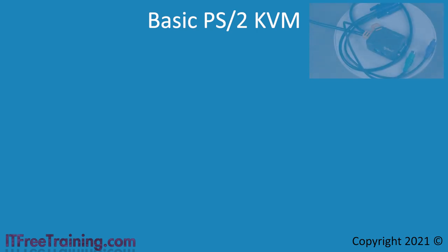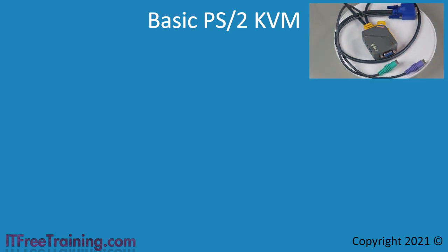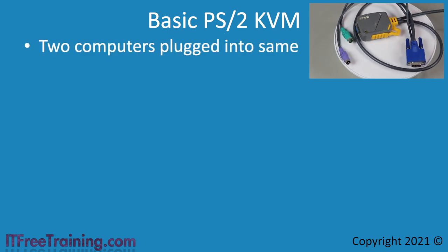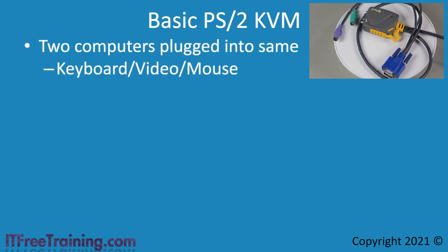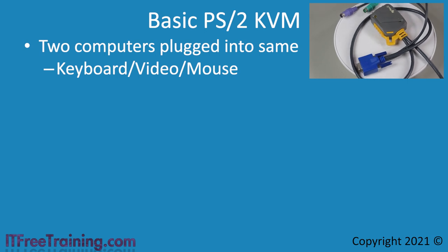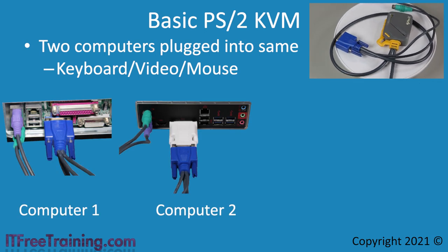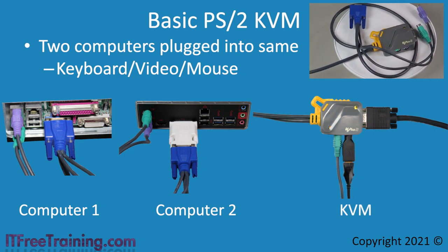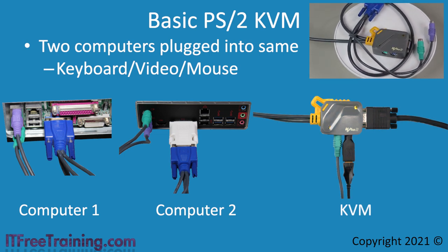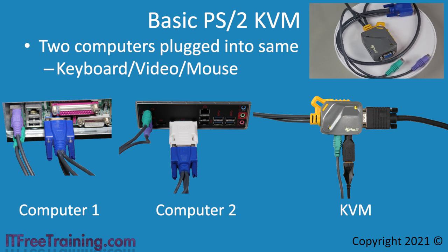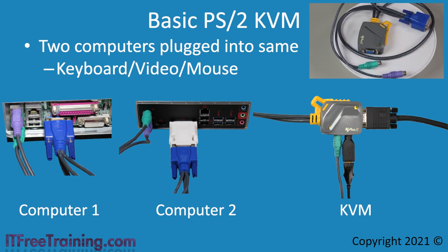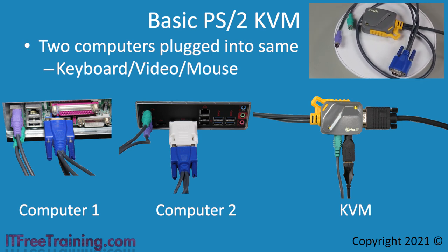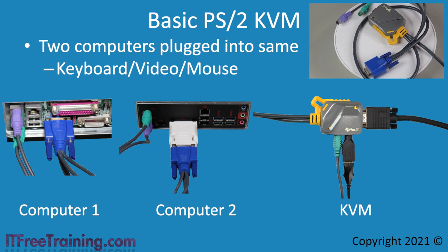The next KVM that I will look at is a PS2 KVM. This particular type of KVM takes two computers and allows them to be plugged into the one keyboard, video and mouse. This is just a matter of plugging each of the plugs into each computer and then plugging the keyboard, video and mouse into the KVM. Nowadays, you won't be using a PS2 KVM as the technology is pretty old. However, it does demonstrate the basics of a KVM in which you plug in your keyboard, video or mouse so it can be shared between your computers.